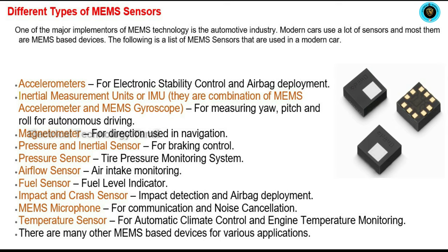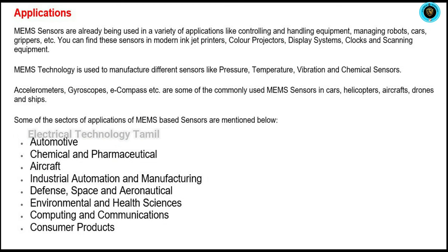A MEMS sensor is used in all places — in robot grippers and car automation, modern inkjet printers, color projectors, display systems, clocks, and scanning equipment.